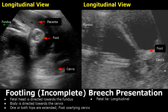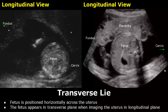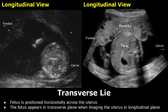In a transverse lie, the fetus is positioned horizontally across the uterus. Although this is a longitudinal view of the uterus, the fetus is seen in a transverse orientation, confirming that this is a transverse lie.